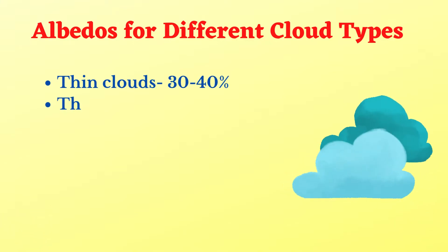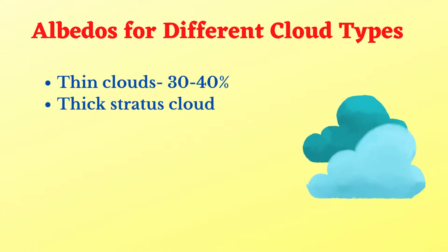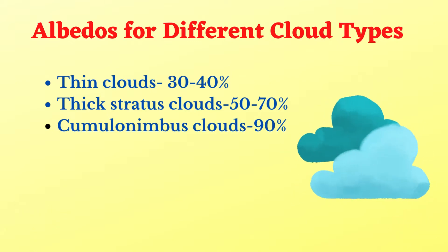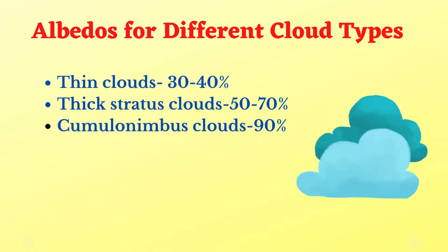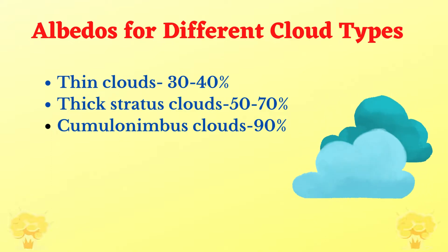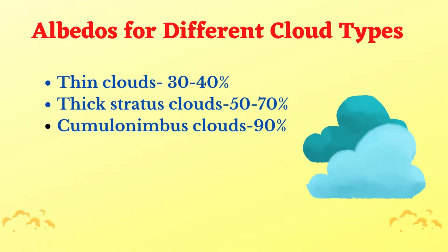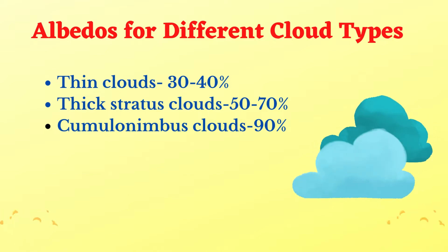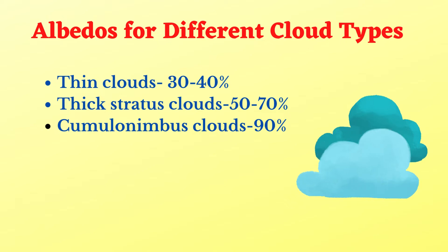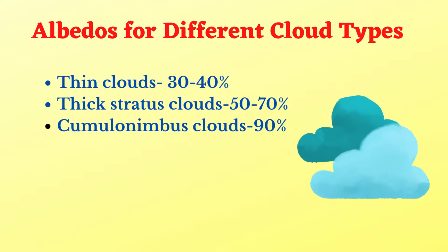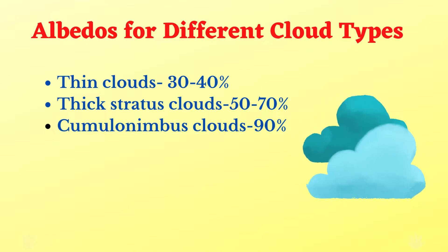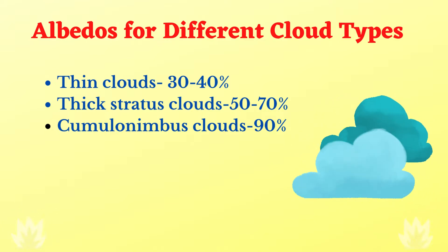Albedo also varies over different types of clouds. Thin clouds, like cirrus clouds for example, have albedos of between 30% to 40%. Some of these thin clouds have less reflectivity and the sun actually shines through them.